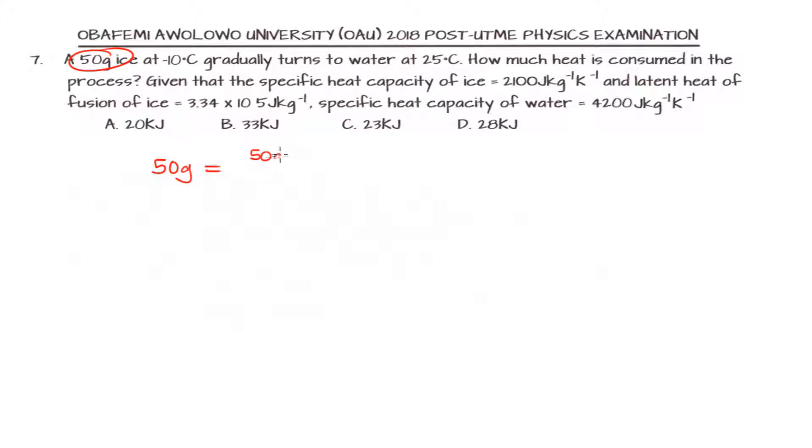We are given 50 gram ice, and we need to convert to kilogram. That will be 50 multiplied by 1 divided by 1,000. This is 5 over 100 kilogram, and that will be 0.05 kg. That is the mass of ice that we are talking about.